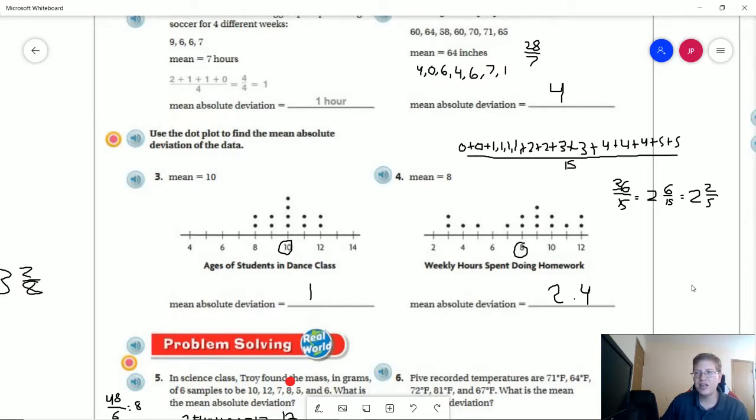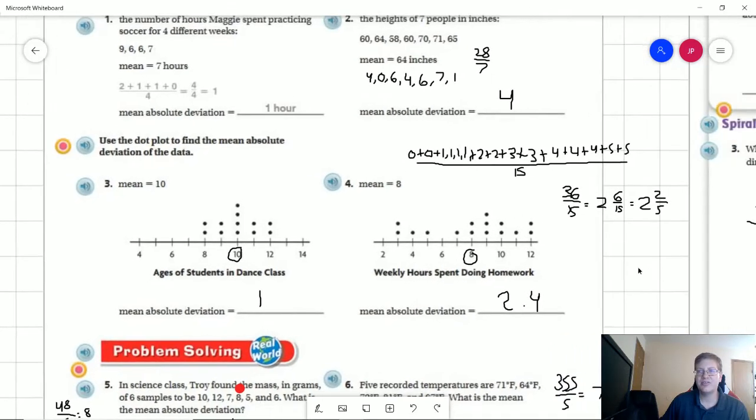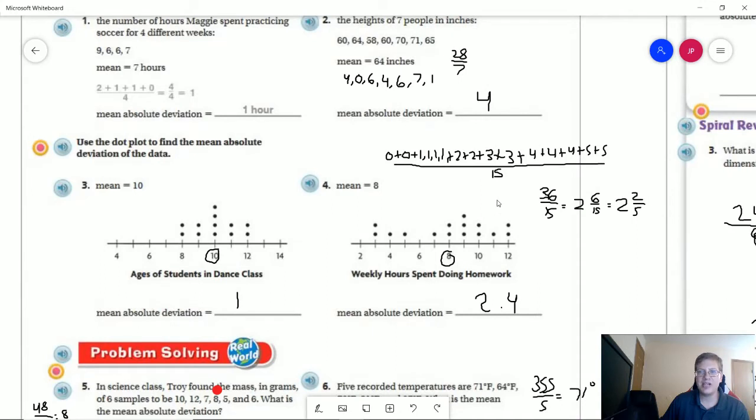For number four, this one wasn't as friendly, so we had a widespread of things. I started with my zeros. Another strategy I sometimes use is working from the center to the outside. Again, this is something you can do later when you're comfortable. If you're able to do it now, that's fine, but I usually suggest working your way across or in the order the numbers are given until you get comfortable with it.